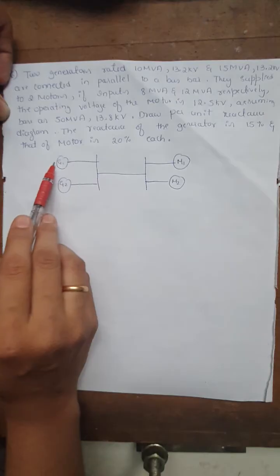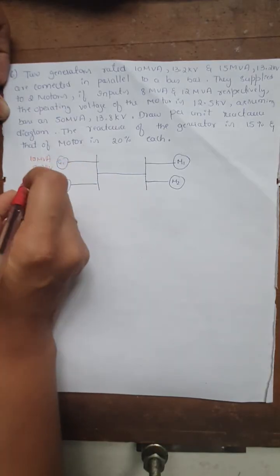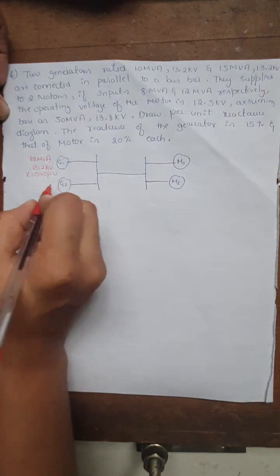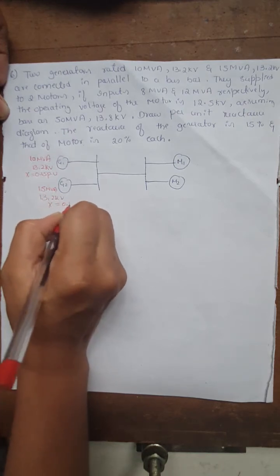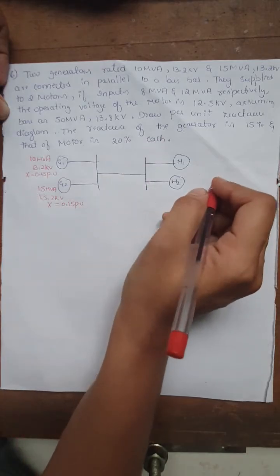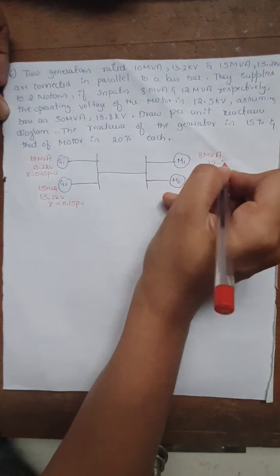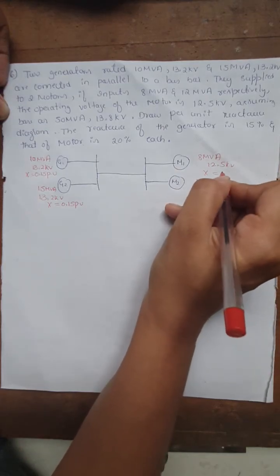The rating of generator 1 is 10 MVA, 13.2 kV with reactance X = 0.15 per unit. Generator 2 has a rating of 15 MVA, 13.2 kV with reactance X = 0.15 per unit. Generator reactance is 15% and motor reactance is 20%. Motor 1 is rated 8 MVA, 12.5 kV and motor 2 is rated 12 MVA, 12.5 kV, both with X = 0.2 per unit.